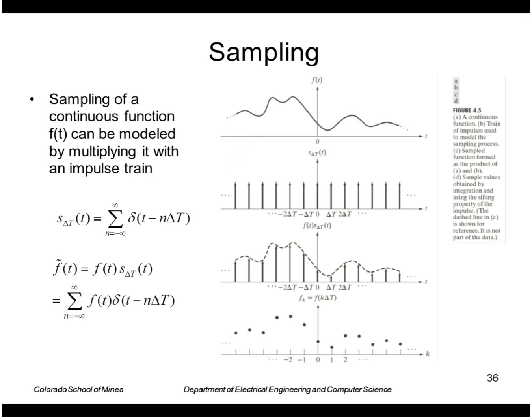We can think of doing that by multiplying by a comb function. Recall that a comb function is a series of impulses separated at delta t.